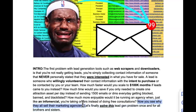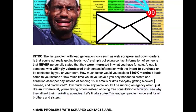Now you see why they all sell their marketing agencies. These YouTube channels, these gurus — they end up selling their agencies and creating a course because they can't stand it anymore. Who wants to keep getting on calls? Let's finally solve this lead generation problem once and for all. We have four main problems with scraped contacts.